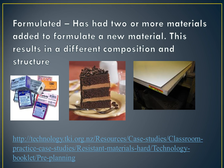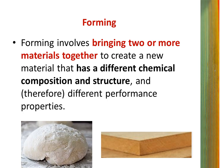The first of these is formulated. Materials that have been formulated have had two or more materials added to formulate a new material. This results in a different composition and structure. Forming involves bringing two or more materials together to create a new material that has a different chemical composition and structure and therefore different performance properties. For example, mixing flour, water and salt to make dough; mixing wood fibres, resin and wax to make medium density fibreboard (MDF); or combining glass fibre and polymer resin to form fibreglass or fibre reinforced polymer.